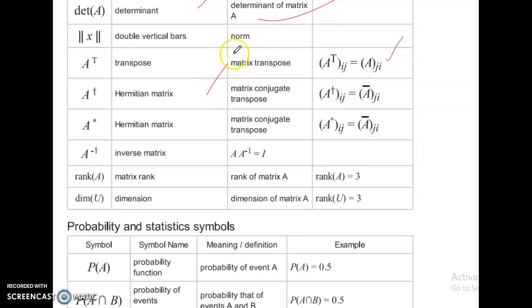Hermitian matrix. A power plus, Hermitian matrix. Matrix conjugate transpose A. Hermitian matrix ij equal to A bar of ji. Hermitian matrix, A asterisk, Hermitian matrix. Matrix conjugate transpose.